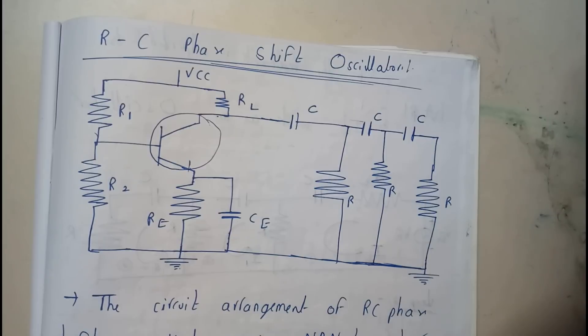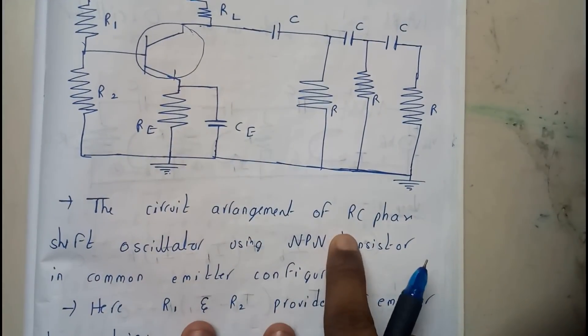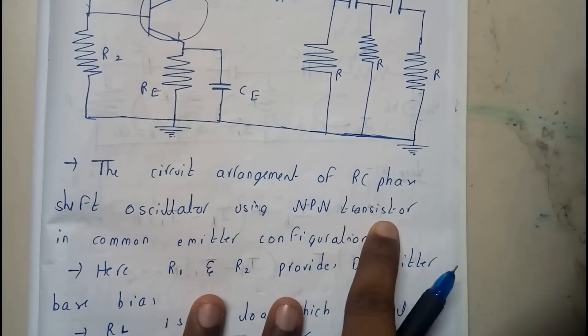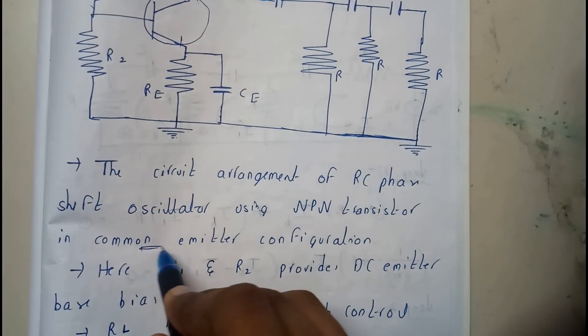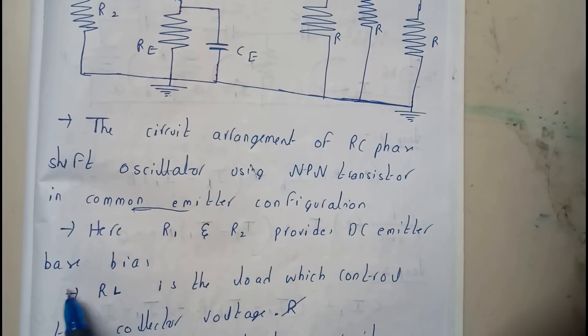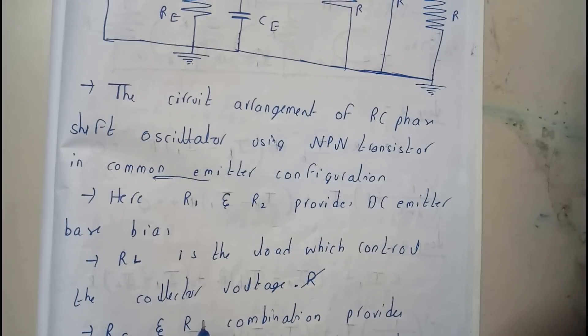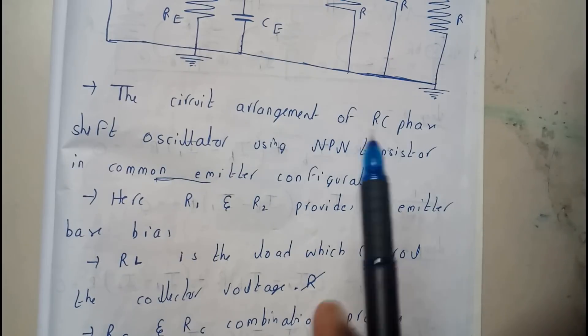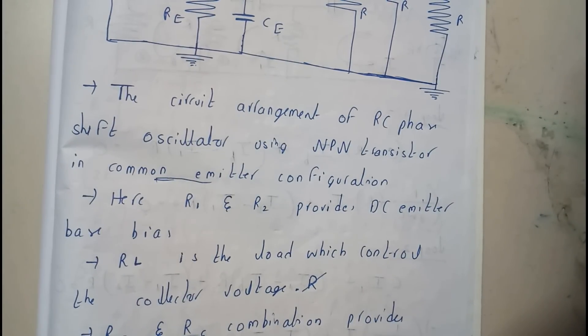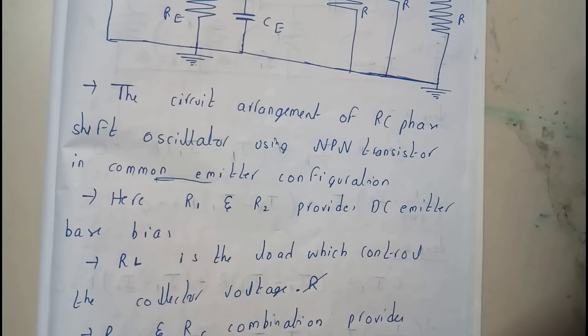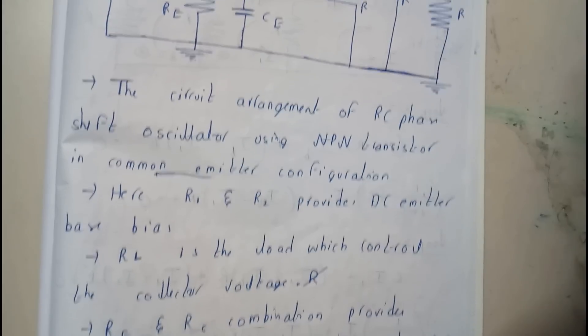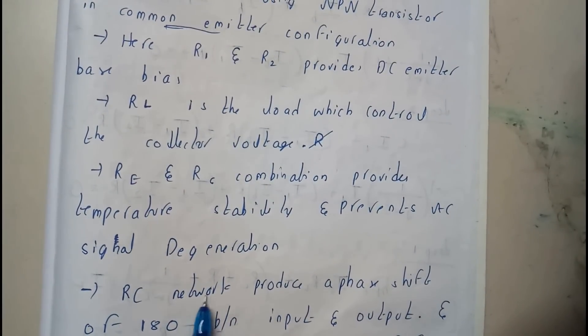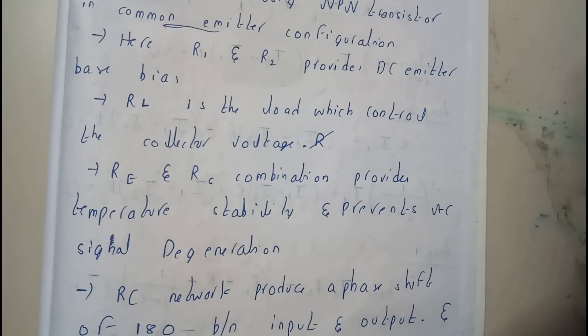The circuit arrangement of the RC phase shift oscillator uses an NPN transistor in a common emitter configuration. R1 and R2 provide the DC base bias. RL is the load resistance which controls the voltage. RE and RC combinedly provide temperature stability and prevention of AC signal degradation.